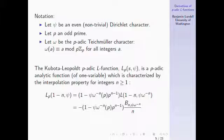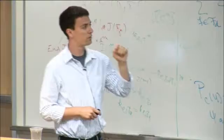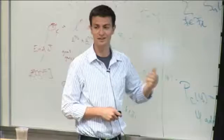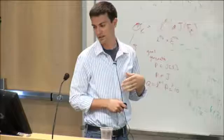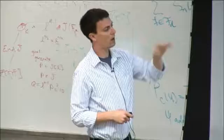The Kubota-Leopold p-adic L-function is a p-adic analytic function of one variable — we'll see two-variable p-adic L-functions later. It's uniquely characterized by an interpolation property: since the integers are dense in the p-adics, if you know what a continuous function does on the integers, you know what it does everywhere. On the left I have my p-adic analytic function; on the right I have my complex function, but I have to twist by powers of the Teichmüller character ω.